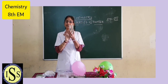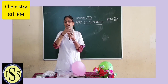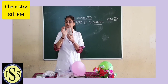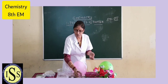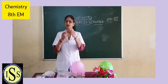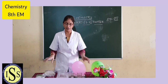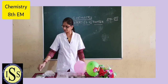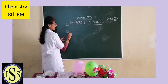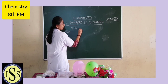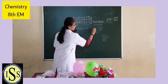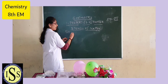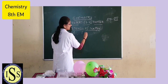Glass is a solid. Then a glass of water — glass is a solid and the water filled in the glass is a liquid. There are 3 states: solid, liquid, and gas. Then stone is a solid. There are 3 physical states of matter. What are the 3 physical states of matter? Solid, liquid, and gas.